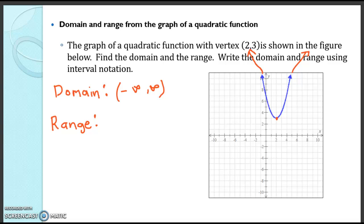Here it's the smallest because it's a minimum, so the smallest our function outputs will ever get is 3. See how that vertex is at the value y equals 3? So the range will go from 3 to infinity.